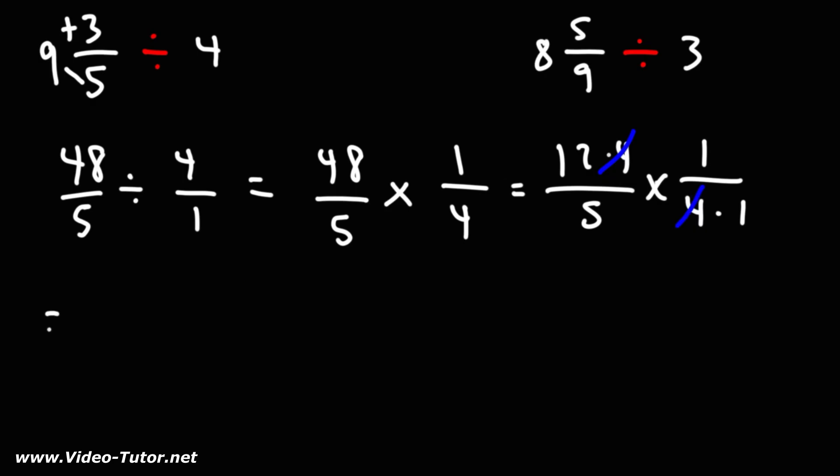Now multiplying across, we have 12 times 1, which is 12, and 5 times 1, which is 5. So the answer as an improper fraction is 12 over 5.